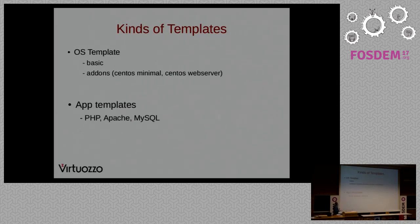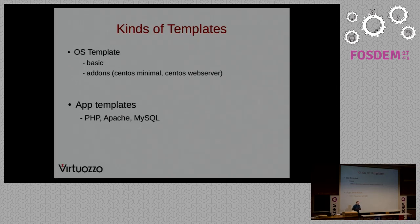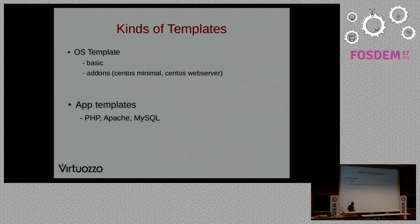What kinds of templates do we have? We separated them into two kinds: OS templates and APT templates. OS templates are basic — for example, basic for Ubuntu is a minimal system. Our basic for CentOS is Bash and a minimal set of tools like Bash, YUM, and probably several others. In total it's about 100 packages, not so many. The second kind is APT templates — like PHP, Apache, MySQL, Redis, et cetera.